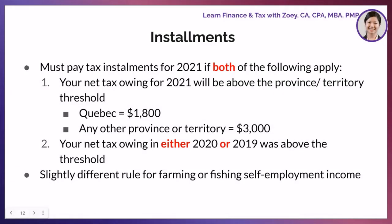There are two factors to consider when determining if you have to pay tax by installments: your province or territory of residence and your net tax owing. You have to pay tax installments for 2021 if both of the following criteria apply. First, your net tax owing for 2021 will be above $1,800 if your province of residence is Quebec, or $3,000 for any other province or territory. Second, your net tax owing in either 2020 or 2019 was above $1,800 if your province of residence is Quebec, or $3,000 in any other province or territory.